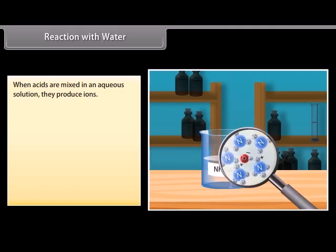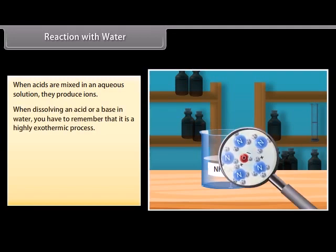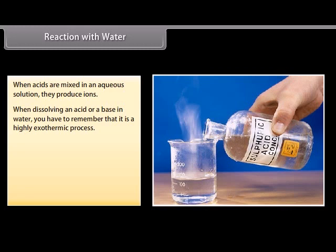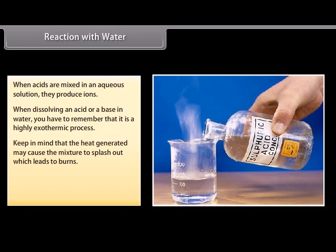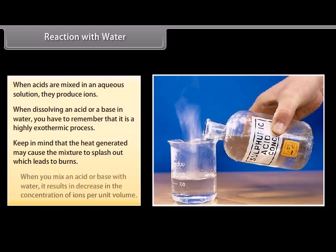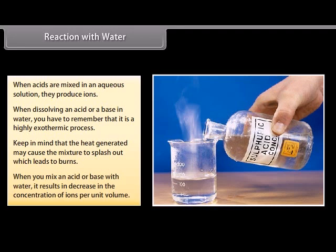Reaction with water. When acids are mixed in an aqueous solution, they produce ions. When dissolving an acid or a base in water, you have to remember that it is a highly exothermic process. While adding water to a concentrated acid, keep in mind that the heat generated may cause the mixture to splash out, which leads to burns. This may lead to the glass container breaking due to excessive local heating. When you mix an acid or base with water, it results in decrease in the concentration of ions per unit volume. This process is called dilution and you get diluted acid or base.